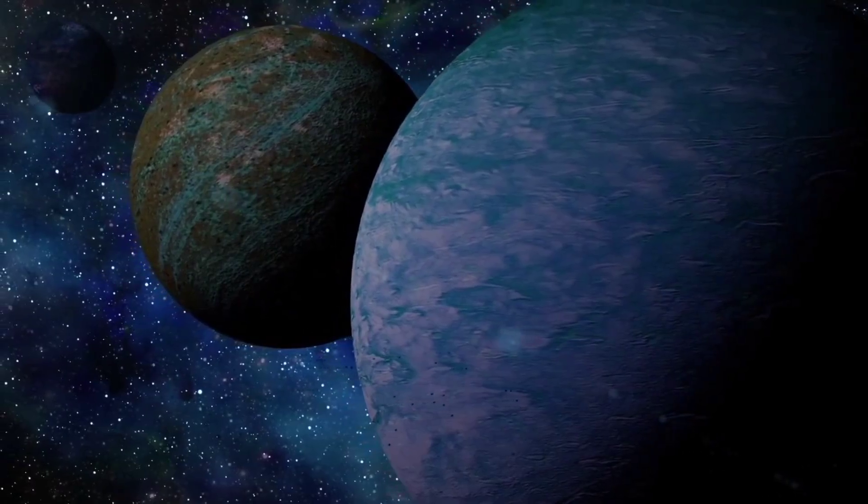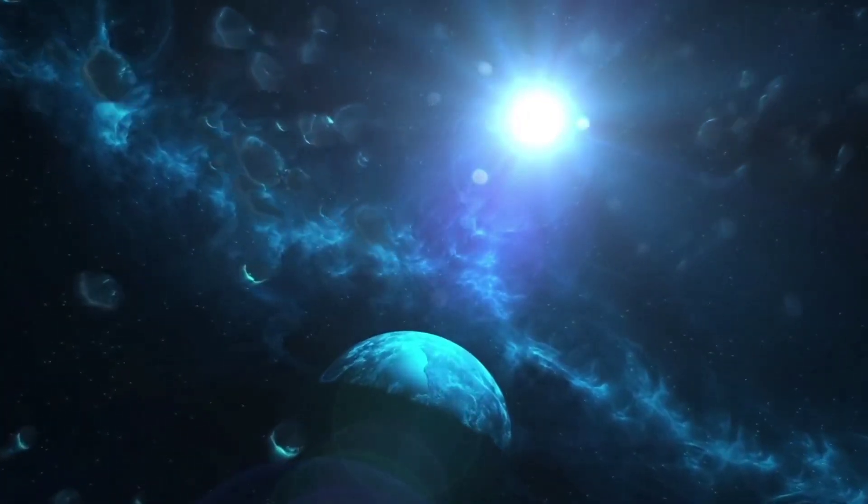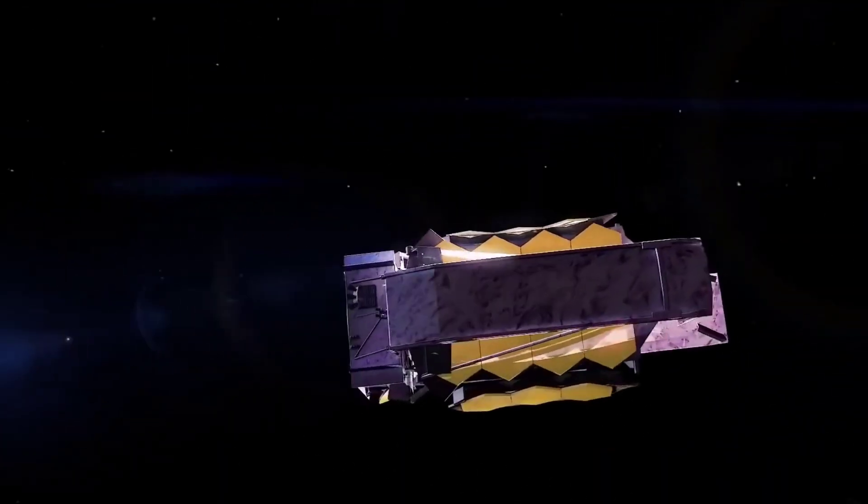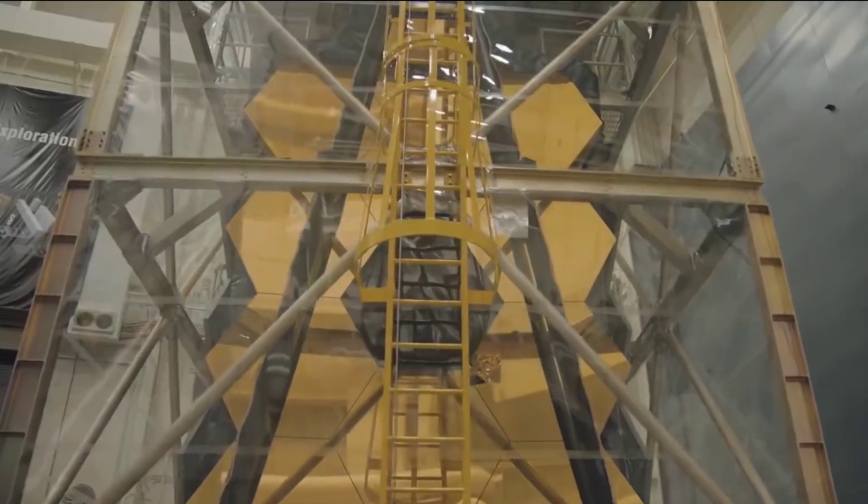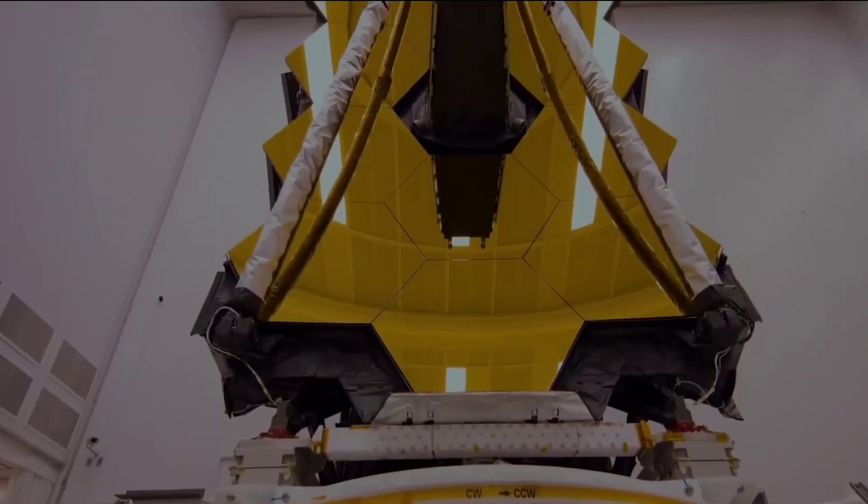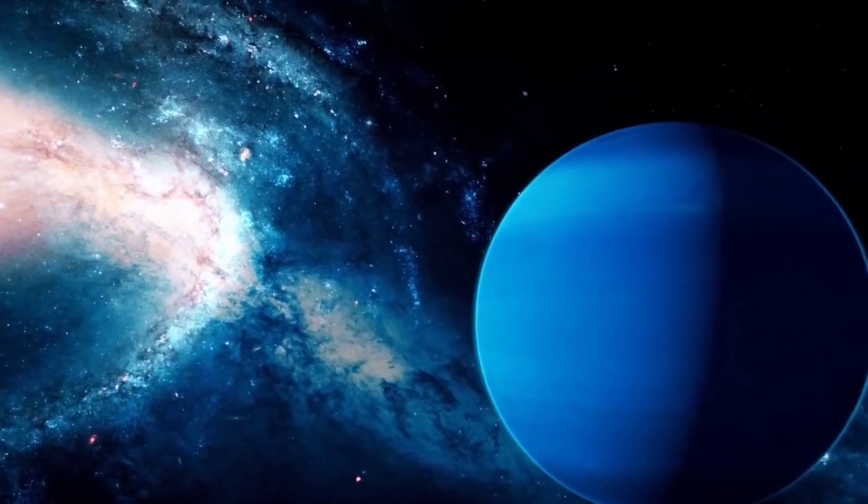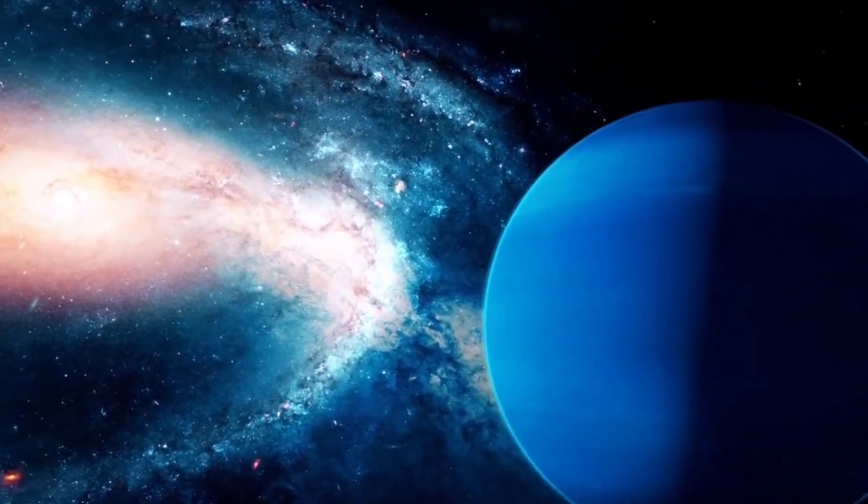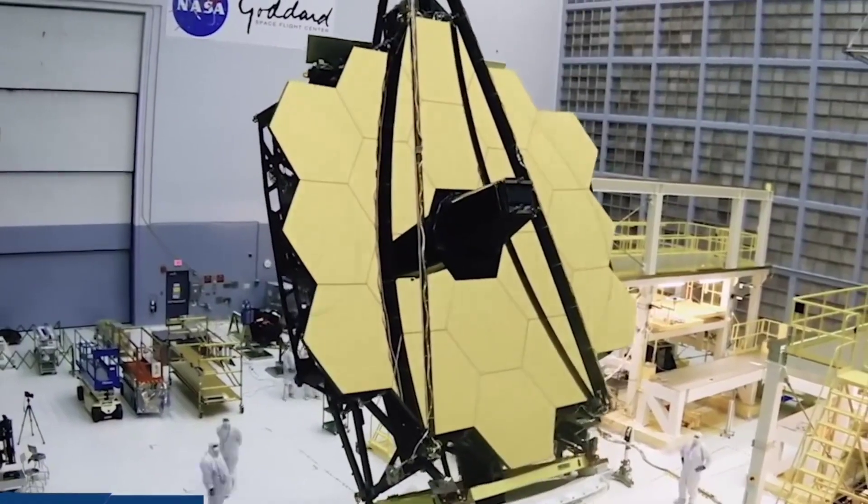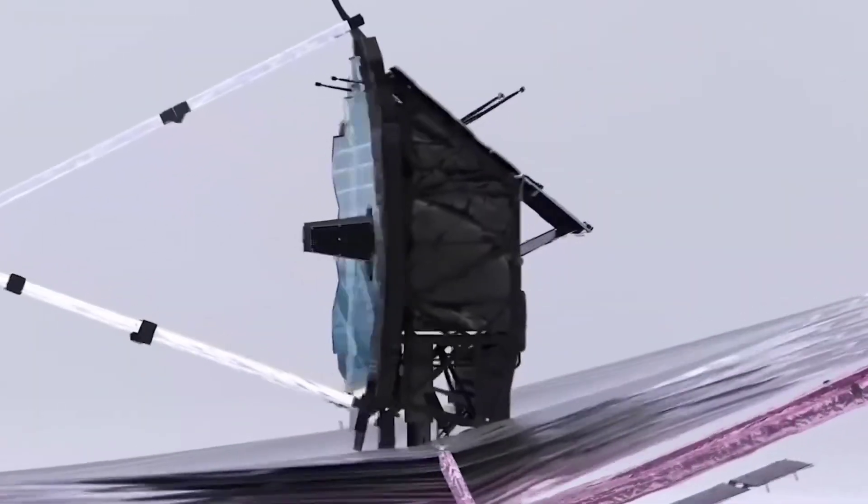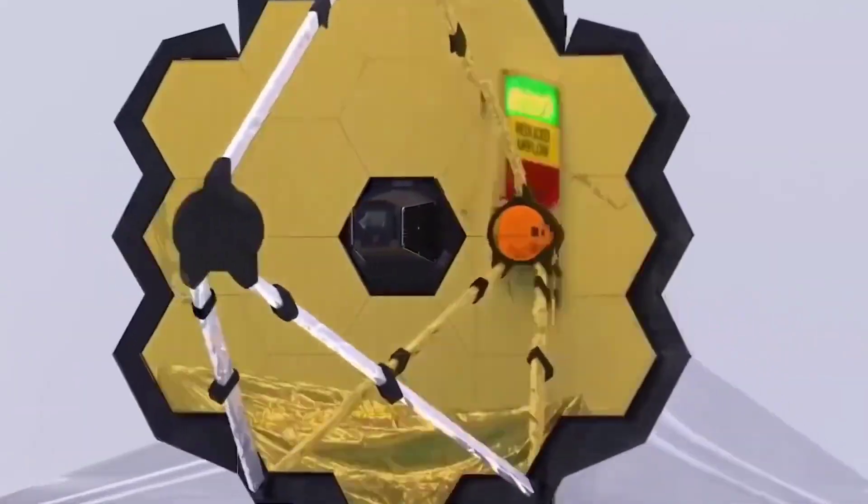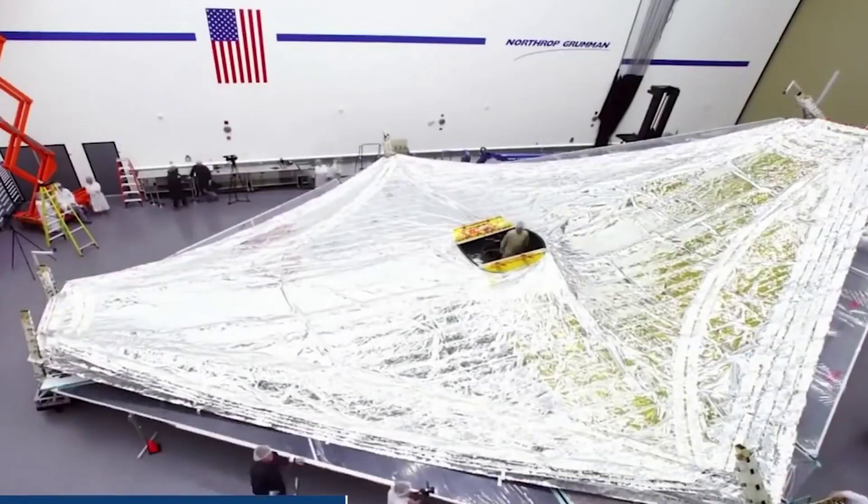On June 21, the near-infrared imager and slitless spectrograph aboard the James Webb Space Telescope took readings of light coming from the WASP-96 system for 6.4 hours. This took place when the planet migrated in front of the star. The result is a transmission spectrum that shows how the brightness of various wavelengths of infrared light between 0.6 and 2.8 microns change throughout the transit, as well as a light curve that displays the overall lowering of starlight that occurred during the transit.